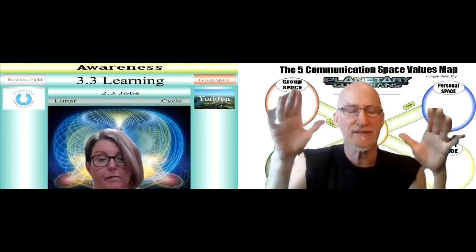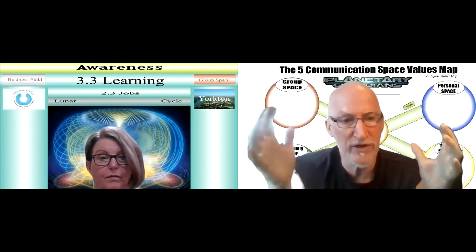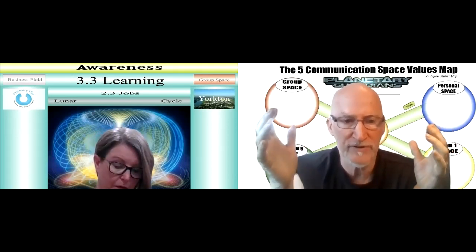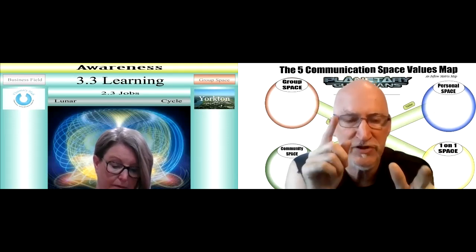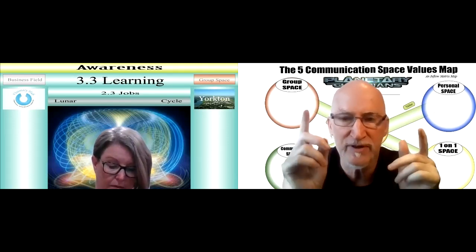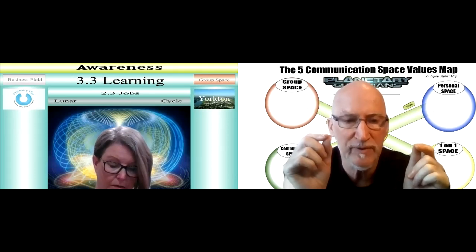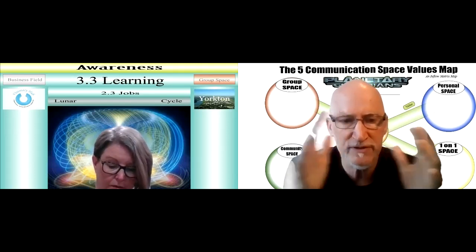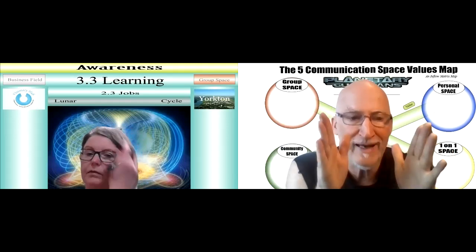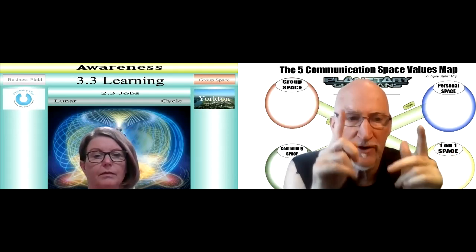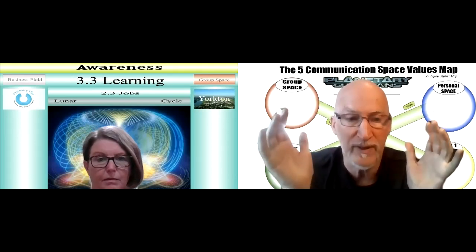Group space, personal space — you can talk while I write. Okay, so you're creating a matrix. You're bringing two models together, and this is kind of like an inflow matrix — information flowing in a matrix. When you bring two models together you create all the possibilities. On one axis you have the five spaces and on the other axis you have the six fields. So you can have a personal space and business field, a one-on-one space and business field, a group space and business field, sacred space and business field, community space and business field. When you bring them together there are 30 — I call them space fields.